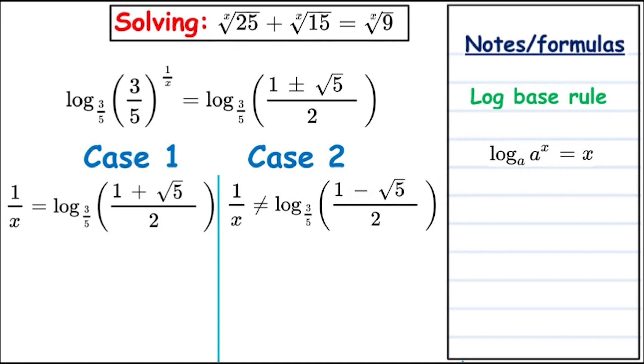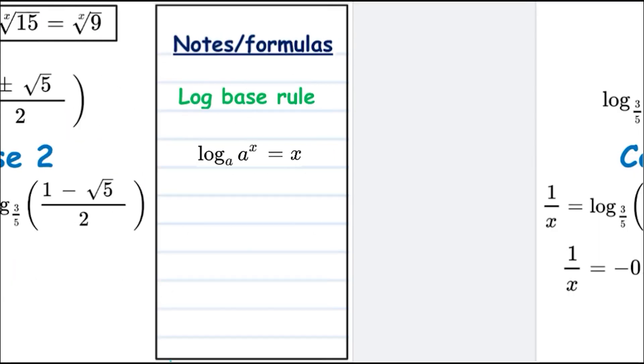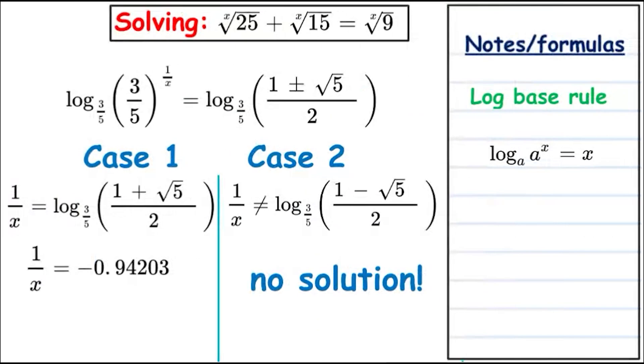Let's compute the one on the left hand side. Log to the base 3 over 5 of 1 plus square root of 5 over 2, and we will get 1 over x is equal to minus 0.94203. If we invert this and just want to get the x, we're going to apply the reciprocal and get x is equal to minus 1.06154.